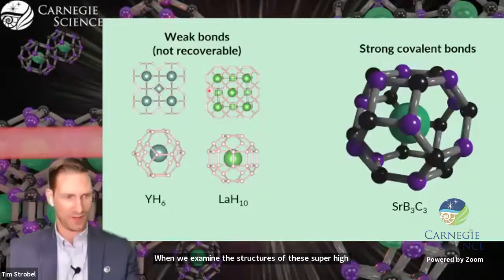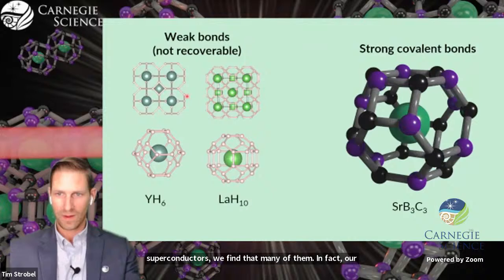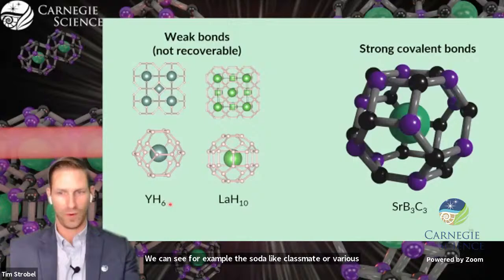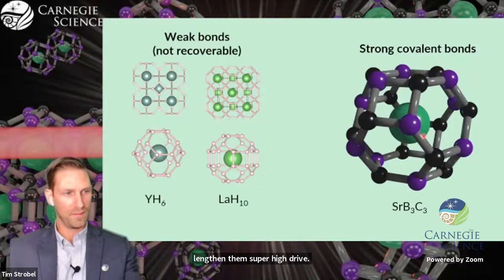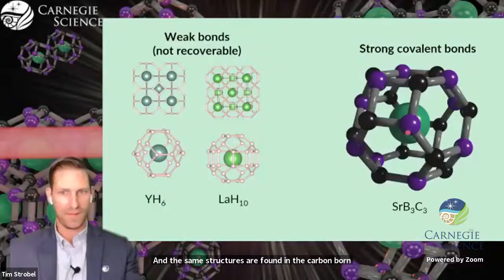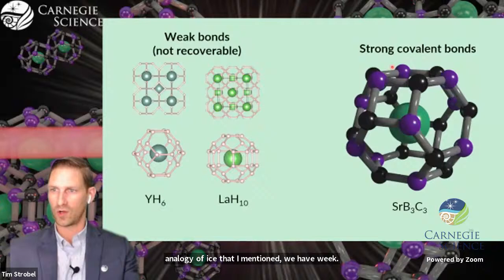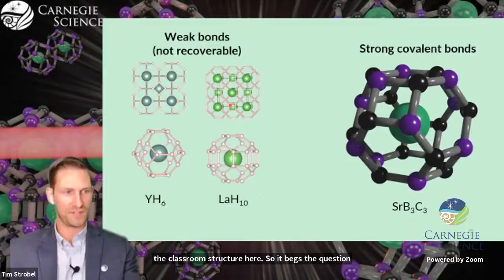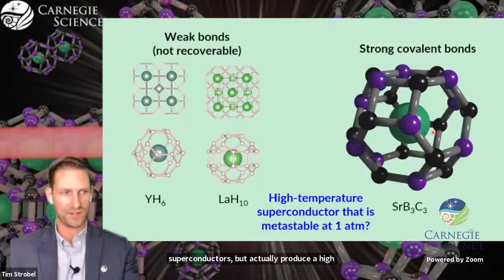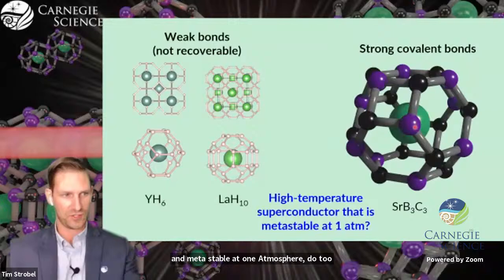When we examine the structures of these superhydride superconductors, we find that many of them are clathrate structures. We can see, for example, the sodalite clathrate or variants of this in yttrium superhydride or lanthanum superhydride. The same structures are found in the carbon boron clathrates. So it begs the question, could we learn from the physics of these but produce a high-temperature superconducting phase that's recoverable and metastable at one atmosphere?